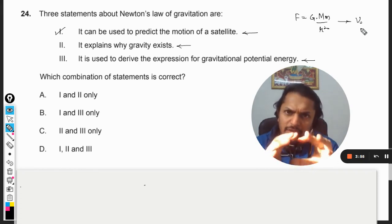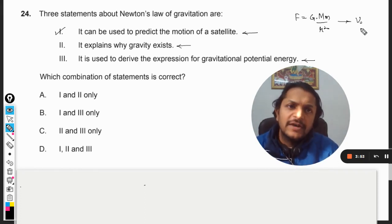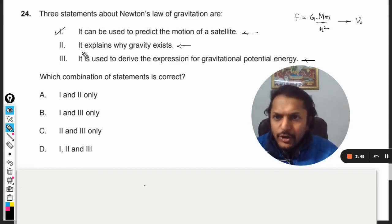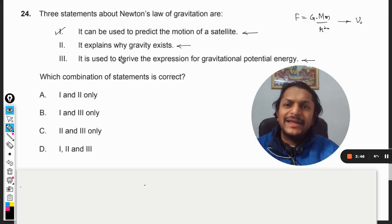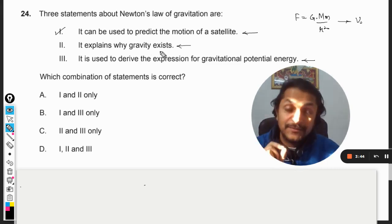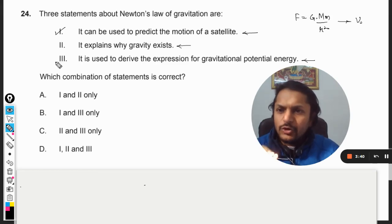This formula itself is used for all of astrophysics majorly near the earth. So I can say that yes it is used to predict the motion of a satellite. Now point number two: it explains why gravity exists. This becomes a little ambiguous I would say.